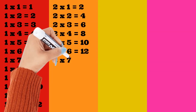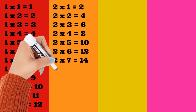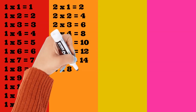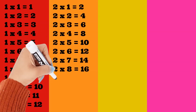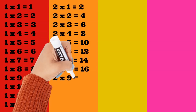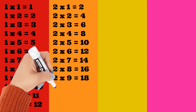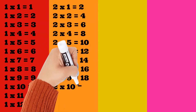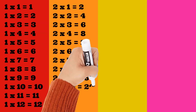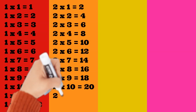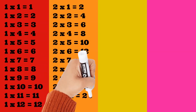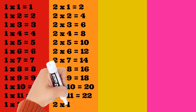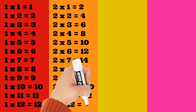2 times 7 is equal to 14. 2 times 8 is equal to 16. 2 times 9 is equal to 18. 2 times 10 is equal to 20. 2 times 11 is equal to 22. 2 times 12 is equal to 24.